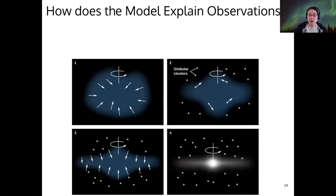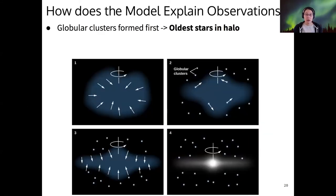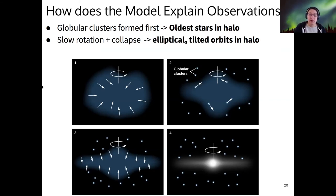So how does this model explain our observations? Well, the globular clusters are distributed in a sphere. They're the oldest stars in our galaxy. So that supports the idea that they formed first in this system. And it supports the idea that this initial gas cloud had the shape of a sphere, not a disk.